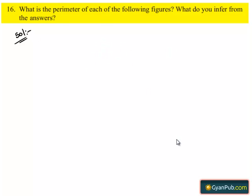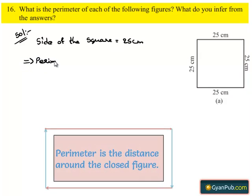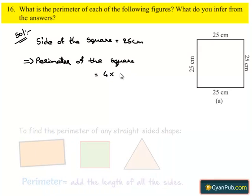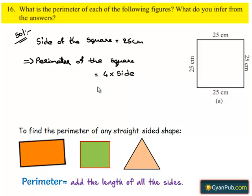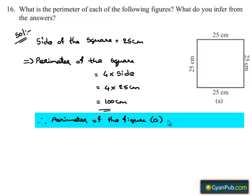Take down the first figure. Here is figure A. We can observe that it is a square of side 25 cm. Therefore, the side of the square is equal to 25 cm. We have to find the perimeter of the given figure. Perimeter of a square is 4 times the length of its side. This is equal to 4 times 25, which gives 100 cm. Therefore, the perimeter of figure A, that is the square, is equal to 100 cm.